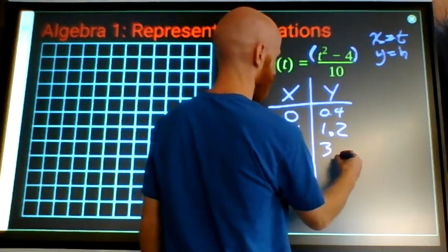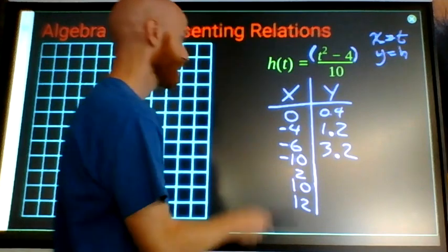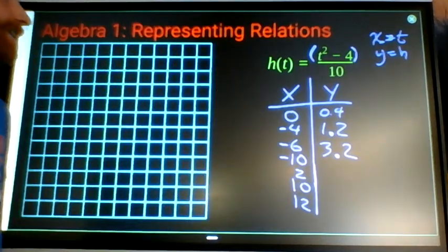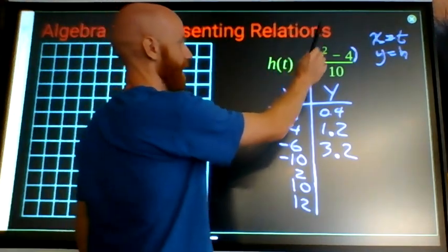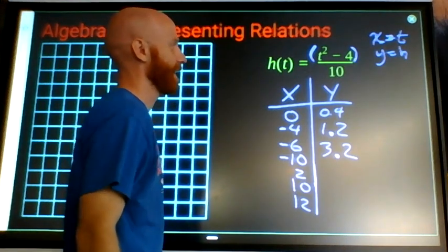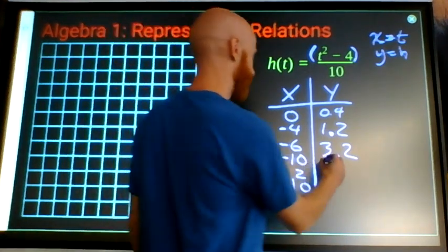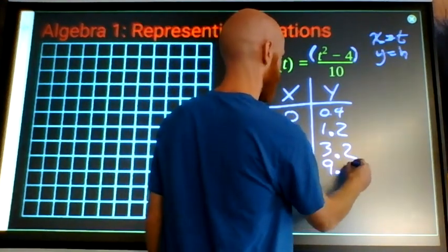When t is negative 6, we've got 36 minus 4 is 32 divided by 10 is 3.2. When t is negative 10, we've got a hundred minus 4 is 96 divided by 10 is 9.6.